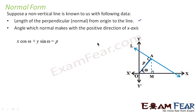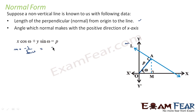If you want, we can prove this also. First, let's find the slope of line L. The slope M of line L is nothing but −1 divided by the slope of line P, because both are perpendicular. So −1 over tan(ω), which gives us −cos(ω)/sin(ω). This is the slope of line L.